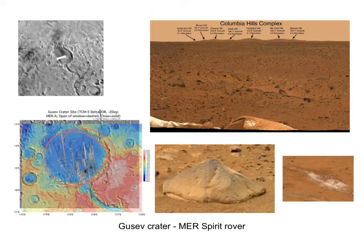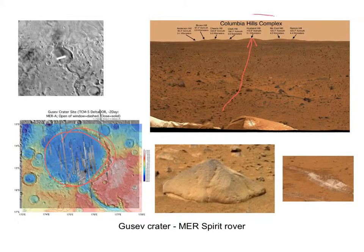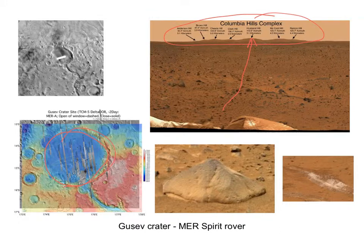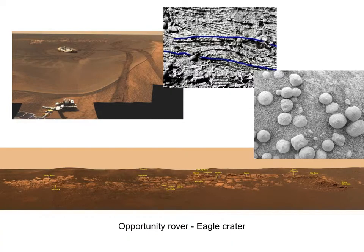So instead they sent the rover on a trip they didn't know whether it would survive. The rover was only meant to last 90 sols — a little over 90 days. But it took several years, and eventually Spirit explored the Columbia Hills, finally getting out of the volcanic plain to see some more interesting rocks.